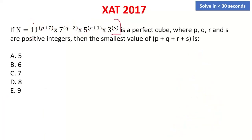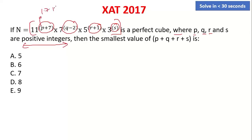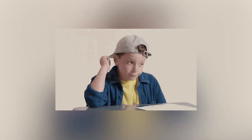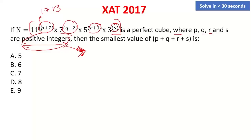Now, this is the perfect cube. All the powers — I will explain them. Where p, q, r, and s are positive integers. We need to find the smallest value of p plus q plus r plus s.